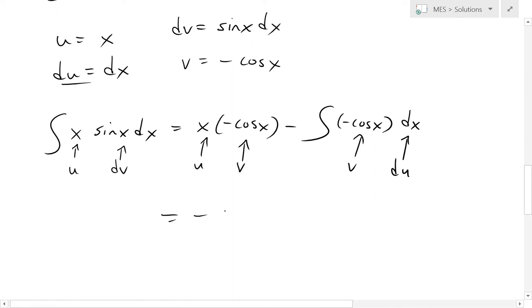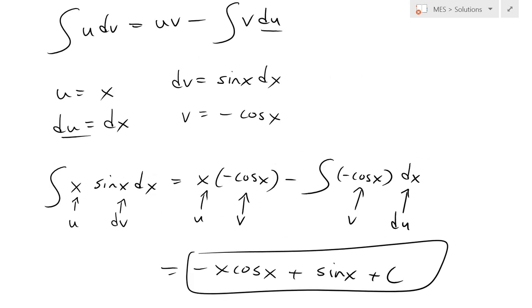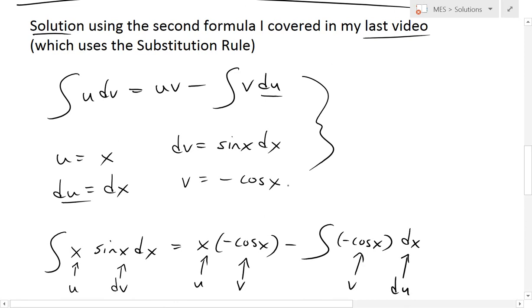This will get the same exact answer: negative x cos(x) plus sin(x) plus c. So it's the exact same thing. I just wanted to go over this one because I'll be doing examples later on using this formula, because it's just easier to do.